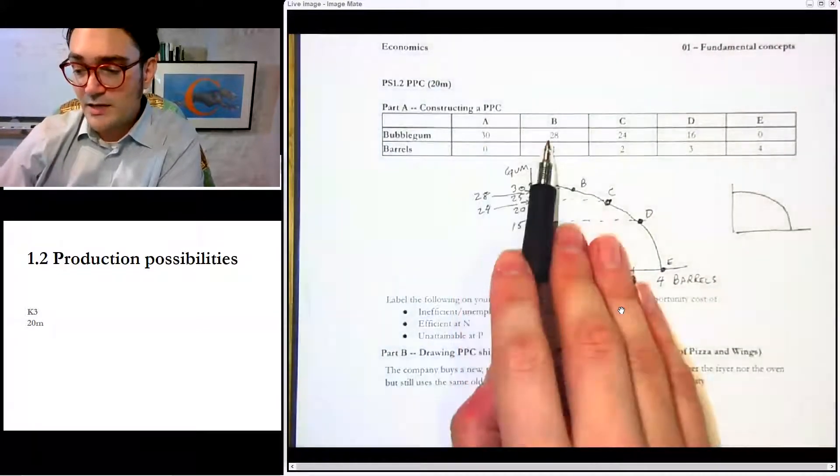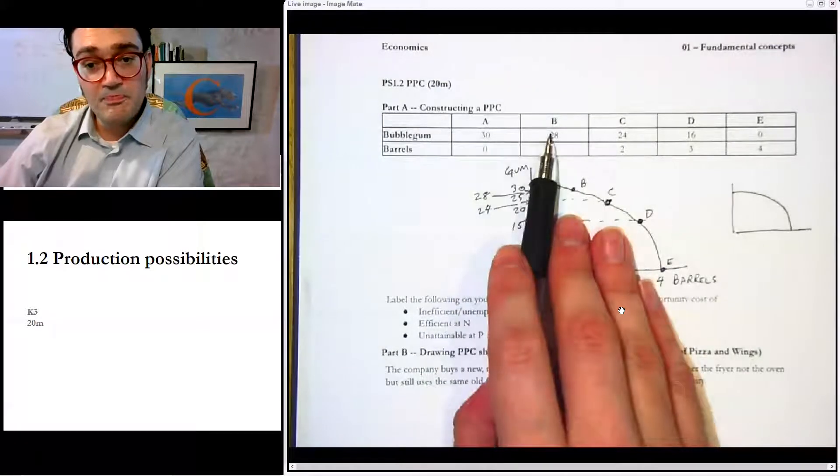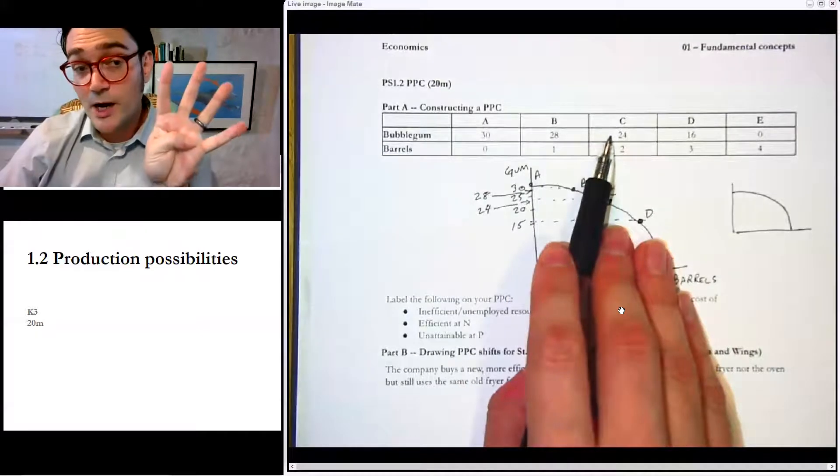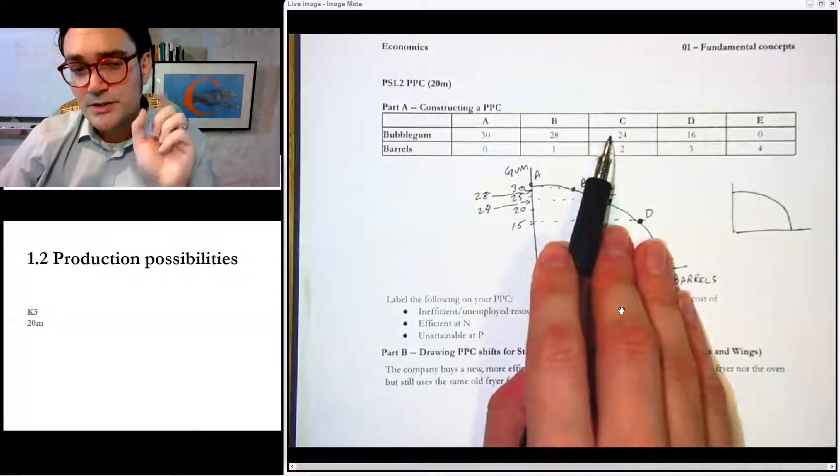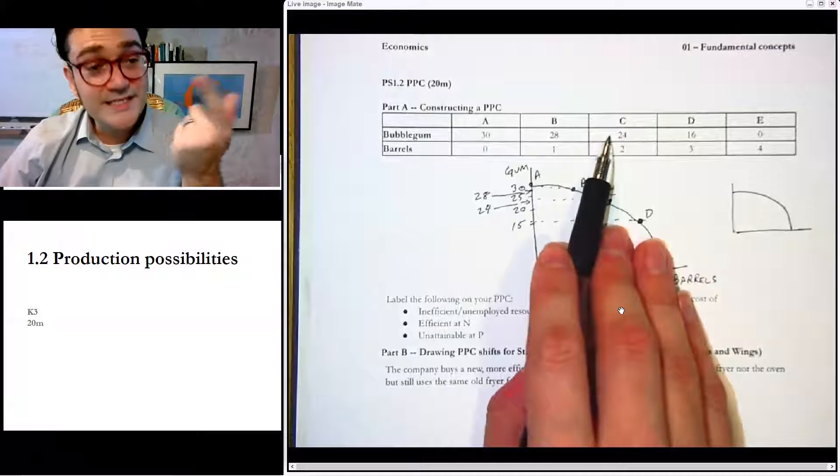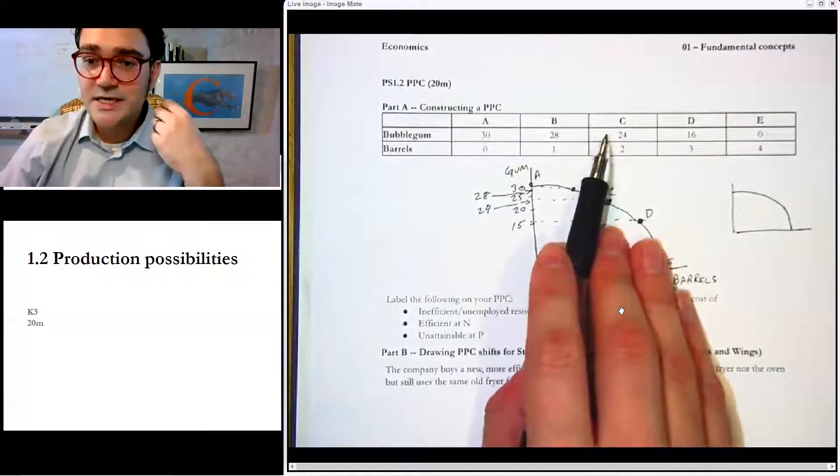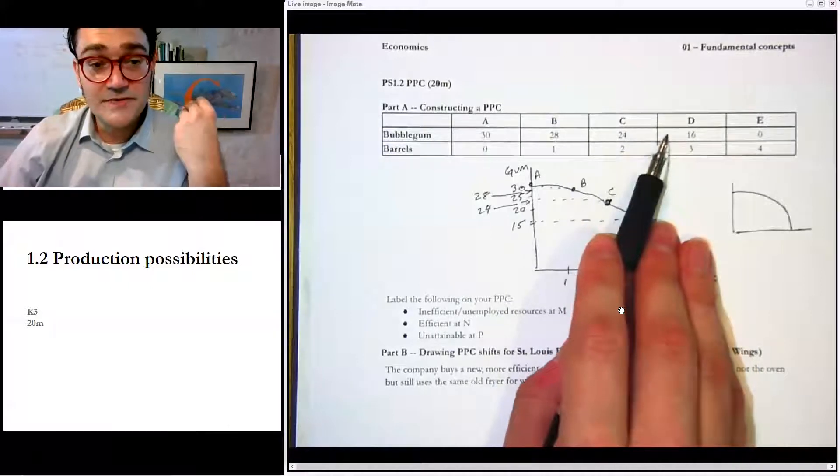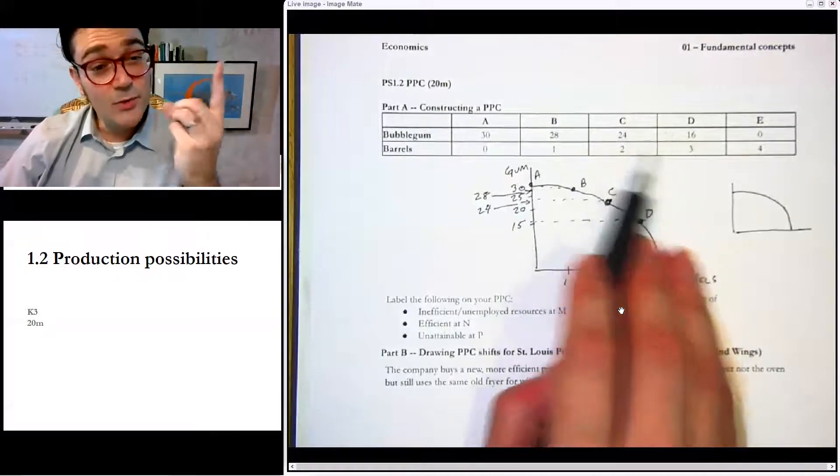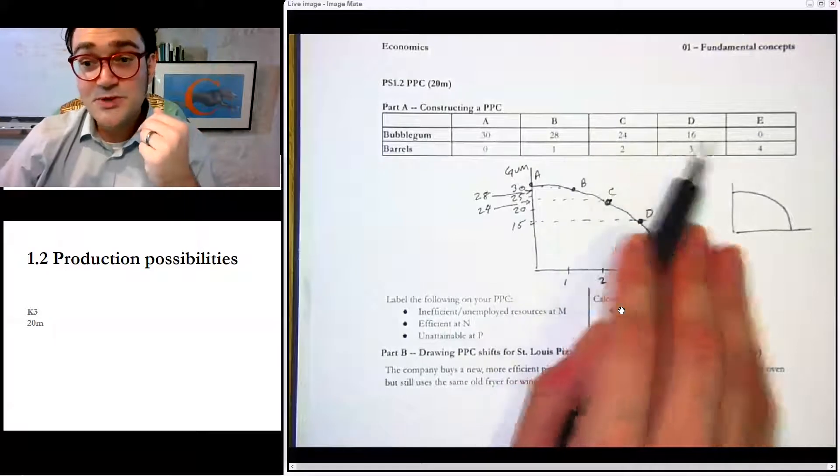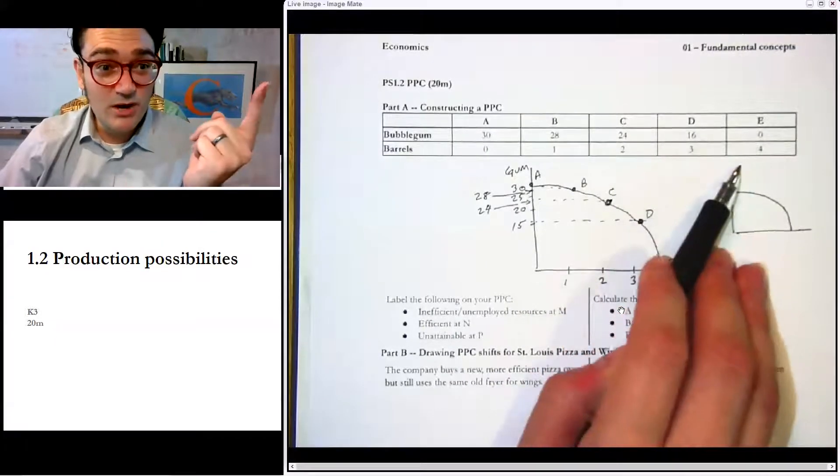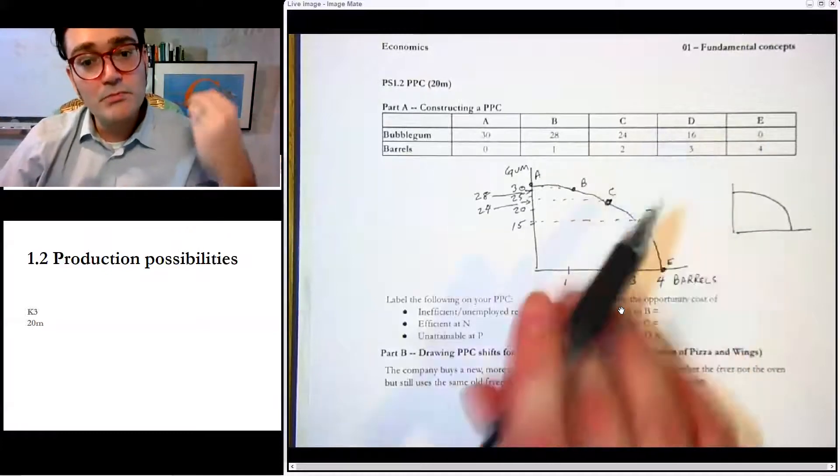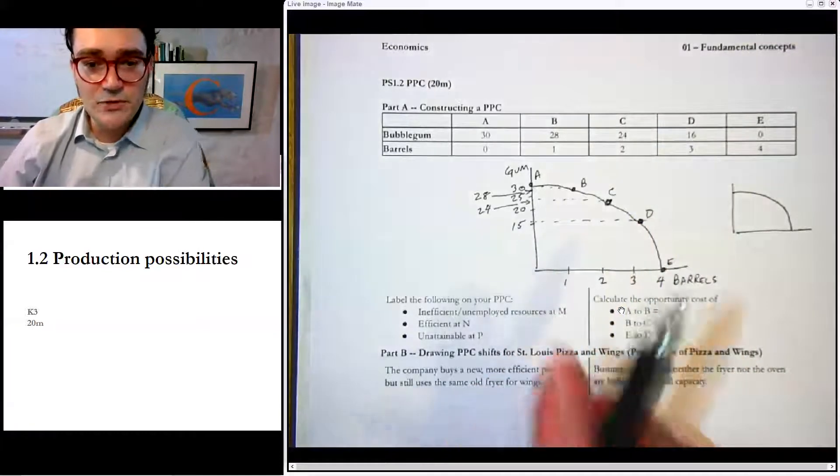Because as we go from A to B, we gave up two gum and we got one barrel. When we go from B to C, we gave up four gum and we got one barrel. So notice that we went from two to four, that's an increasing opportunity cost. When we went from C to D, you gave up 24 to 16, that's eight. So you give up eight gum, you only get one barrel. And then the last one, you gave up all 16 gum, you only got one barrel. So each time you made one more barrel, you're giving up more and more bubble gum. That's the idea of increasing opportunity cost.